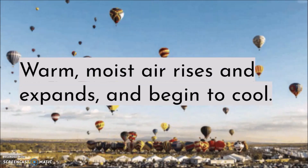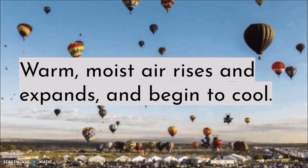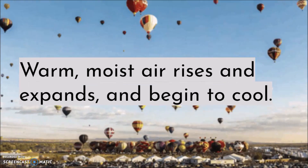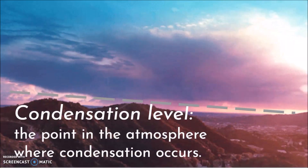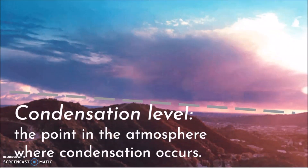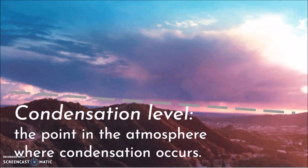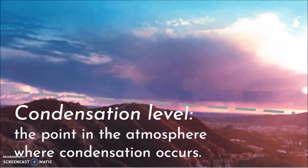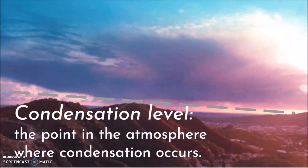The air that is warmed up and filled with water will begin to rise and expand, and as it gets higher, it begins to cool. The imaginary line in the sky that tells us where condensation is going to take place is called the condensation level. This is where the temperature is at the dew point, which means this is where water vapor is going to condense into liquid.